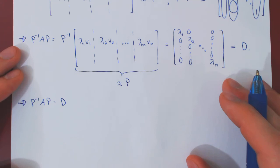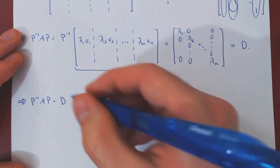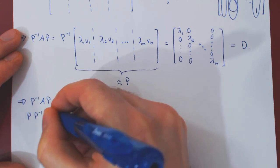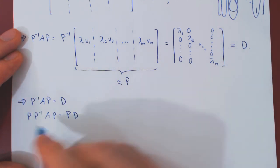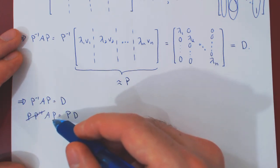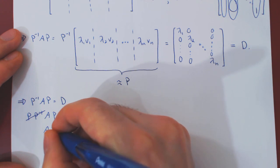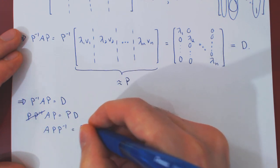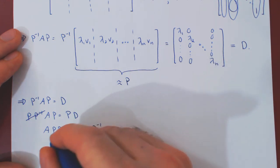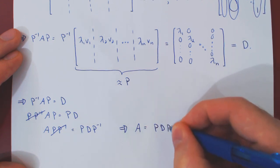The result we were after, thinking of computing high powers of matrix A, was to isolate A. We multiply on the left by P: P times P inverse AP equals PD, and since P times P inverse is I, this gives AP equals PD. Multiplying both sides on the right by P inverse, and since P times P inverse is I, we obtain A equals PDP inverse. This completes the proof.